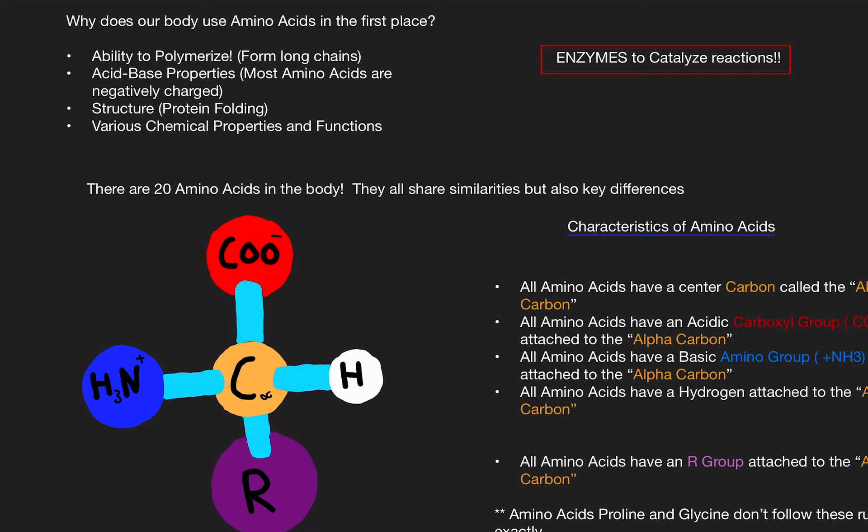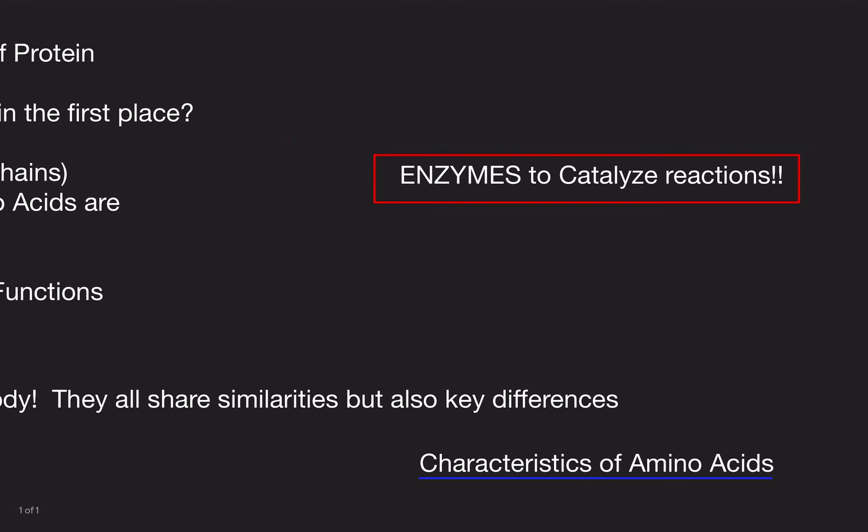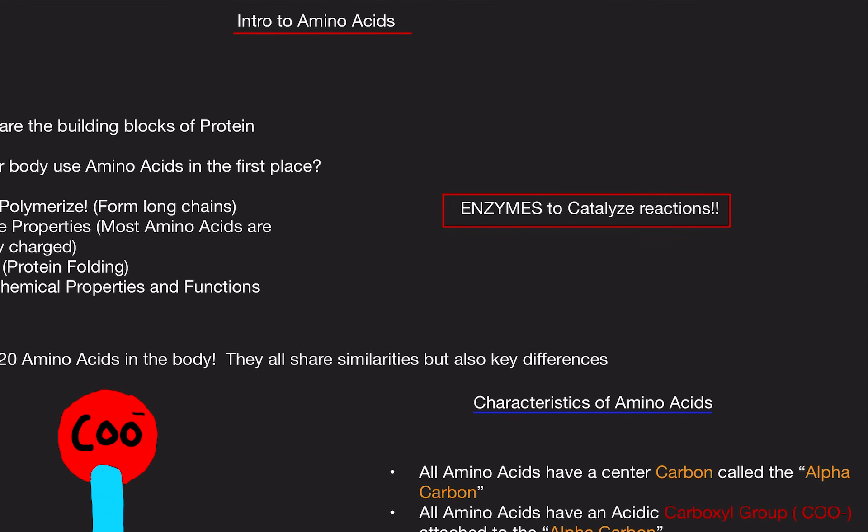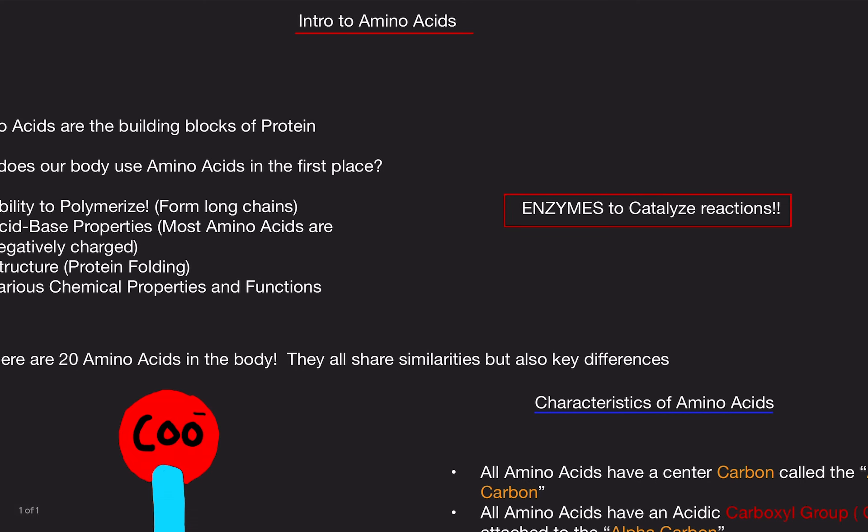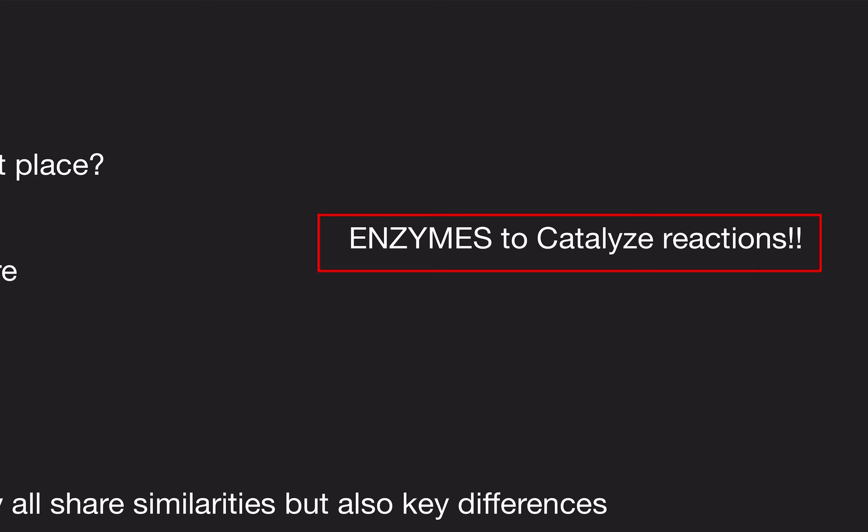And it also has various chemical properties and functions. The biggest thing is, this is like the key for biochemistry here, is enzymes. Enzymes are proteins. And since amino acids make proteins, this is basically saying that amino acids are essentially enzymes. And enzymes help catalyze reactions that make them go faster. They reduce the activation energy. That's something we're going to go over in a later video. But this is so important for biochemistry.